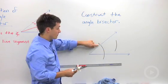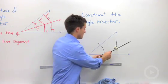And you're going to swing an arc from each of these endpoints. So there's one arc from this intersection. Here's another point of intersection that I'm going to swing an arc from.